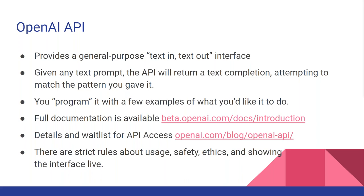There are a lot of rules about usage, safety, and ethics in showing the interface live. So everything I've done that involves actually using the API is prerecorded, because I'm not allowed to show it live. The reason is they occasionally flag things and say this may be dangerous or sensitive. I've not had it produce anything that was objectionable — every time it's flagged something, it was a false positive. But if it were to produce something sensitive, I'm not allowed to show that publicly.